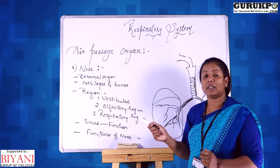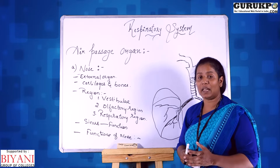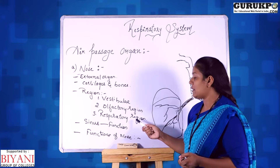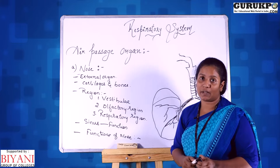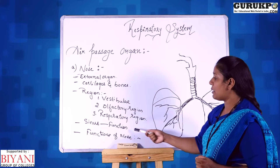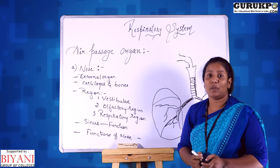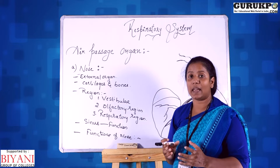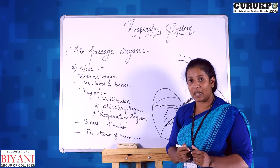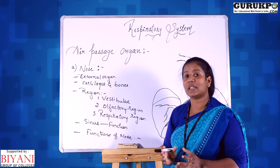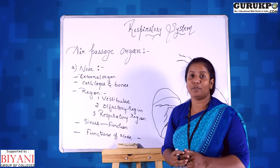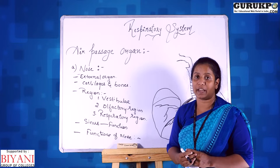The olfactory region occupies the upper one-third part of the nasal cavity and contains olfactory receptors which help in olfaction. The respiratory region has mucous membranes which secrete mucus and make the air warm and humidified. There are also sinuses present in the nasal cavity which extend as air sacs into the bones towards the skull and contain air. The function of the sinuses is to make the skull light, and they consist of mucous membranes which secrete mucus and help in humidifying the air.